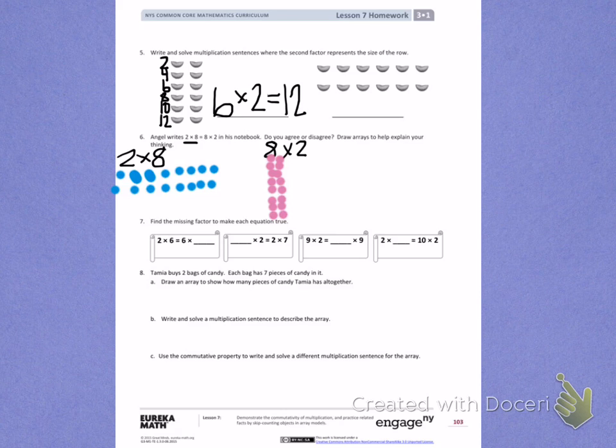Use those two pictures to help you decide if Angel is correct in saying 2 times 8 equals 8 times 2. Use words to explain.